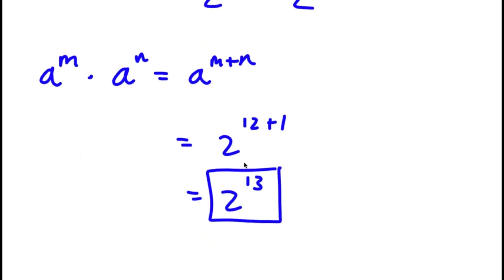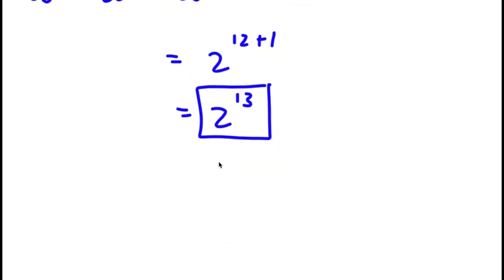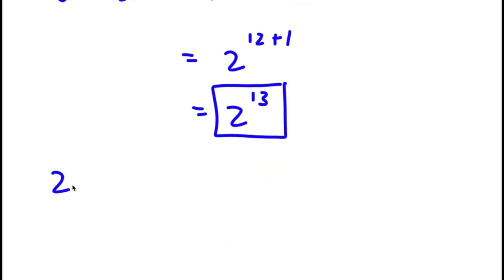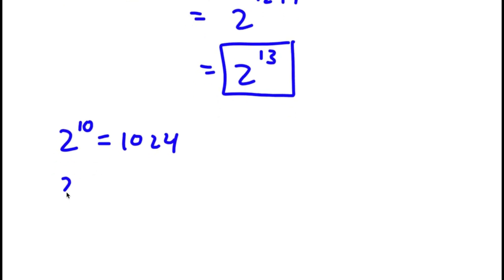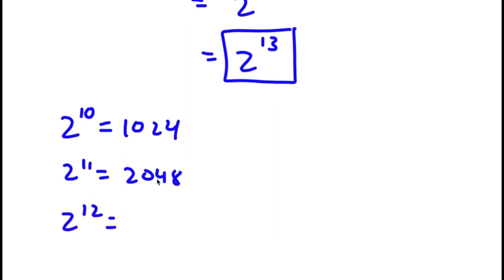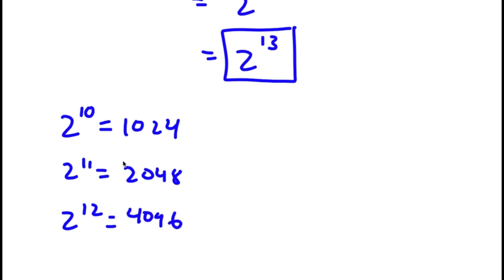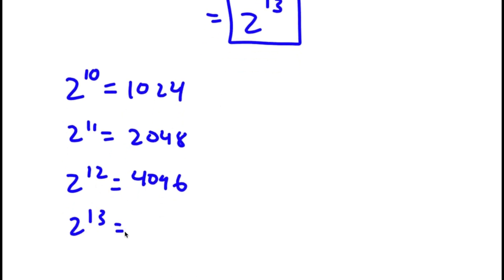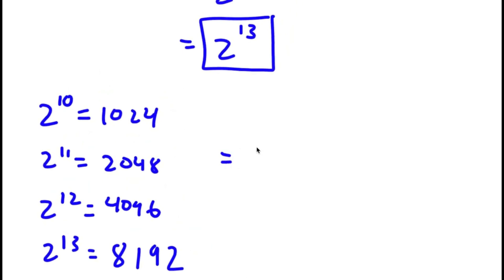So 2 to the power of 13 is my answer. I'm going to go ahead and simplify. We know 2 to the power of 10 is 1,024. So 2 to the power of 11 is double 1,024, which is 2,048. And 2 to the power of 12 is double 2,048, which is 4,096. So 2 to the power of 13 is double 4,096, which is 8,192. So 8,192 is my answer.